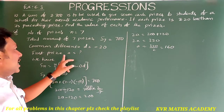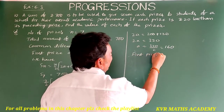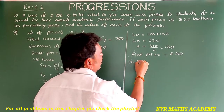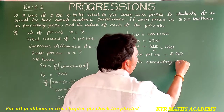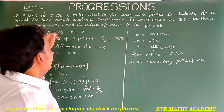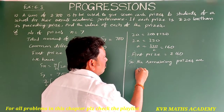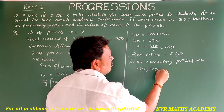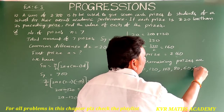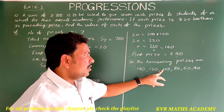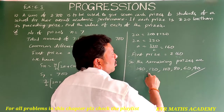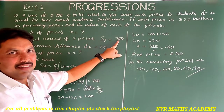The first prize is Rs. 160. Since every prize is Rs. 20 less than the preceding prize, the remaining prizes are: 160 − 20 = 140, 140 − 20 = 120, 120 − 20 = 100, 100 − 20 = 80, 80 − 20 = 60, and 60 − 20 = 40. So all the prizes are 160, 140, 120, 100, 80, 60 and 40. If you add all these prizes you will get 700. Note it down.